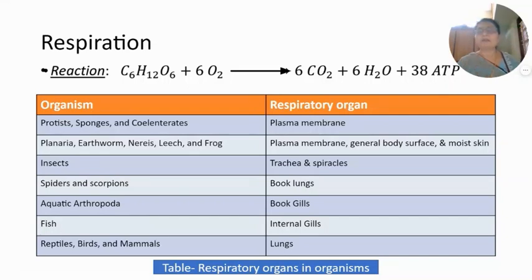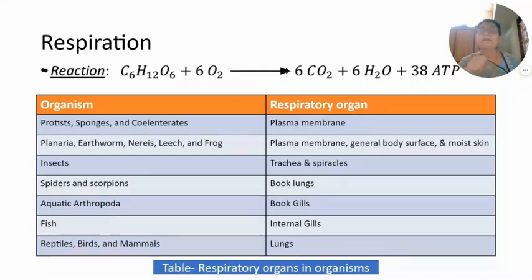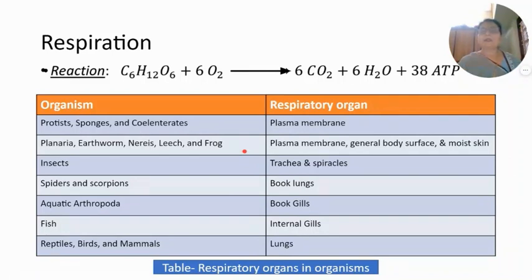In lower category animals which do not have a well-organized system, the organs for respiration are different. In higher category animals, the organs of respiration are also different. You have to study the respiratory organs in different animals using this chart. I will discuss this chart and provide some additional examples for each phylum.